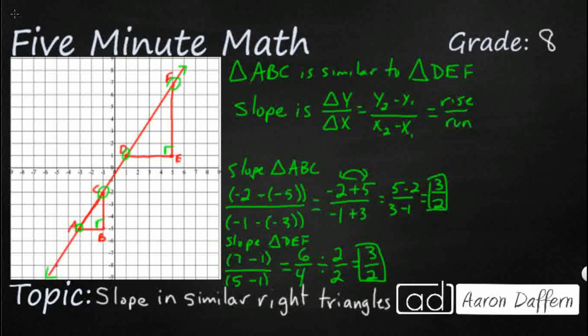So look at that - 3 halves. So they are the same. The slope of ABC is equal to the slope of DEF because they are similar right triangles and their hypotenuses are on that same line. And so any other similar triangles we put on the same line would have equal slopes.